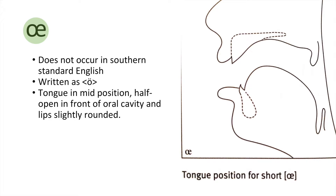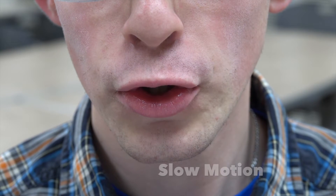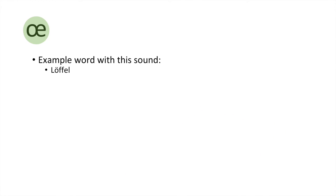Our next sound is ö. This sound isn't found in English. To pronounce this, have the tongue in the mid position, with the front of the oral cavity half open while using slightly rounded lips. Here is an example word: Löffel. Now try saying these words on your own.